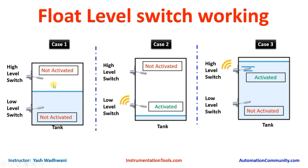As the pump starts, water begins filling. When the water rises above the low level switch, the low level switch will deactivate, but the pump will remain ON until the water level becomes higher than the high level float switch. At that point, the high level switch will be activated, give a signal to the PLC, and the PLC will stop the pump. In this way, the pump operates automatically based on the low level and high level switches.